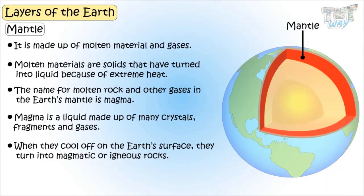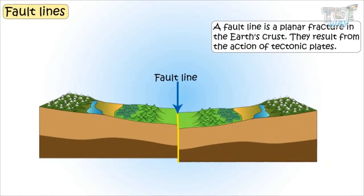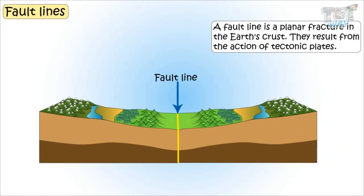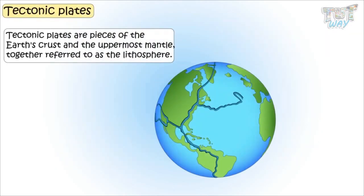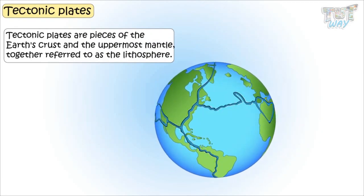Now let's learn what fault lines are. A fault is a planar fracture in the earth's crust, and faults result from the action of tectonic plates. Tectonic plates are pieces of the earth's crust and the uppermost mantle, together referred to as the lithosphere.